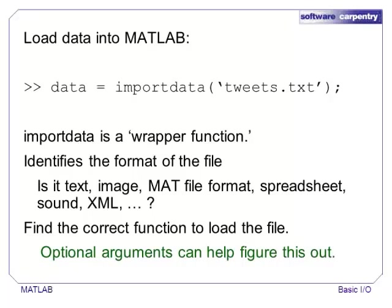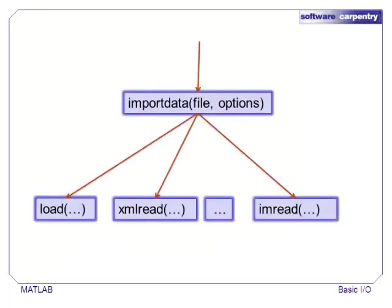importdata is a wrapper function, which means its job is to figure out what format the file is using and identify the correct function to read the data. Sometimes, importdata may have trouble identifying the correct format of a file. This is especially true if the file uses an unexpected column delimiter or has multiple header lines. Type help importdata to see more information about optional arguments. Wrapper functions help hide internal details from the end user. In this case, importdata will call a function like load, xmlread, or imread depending on the file.